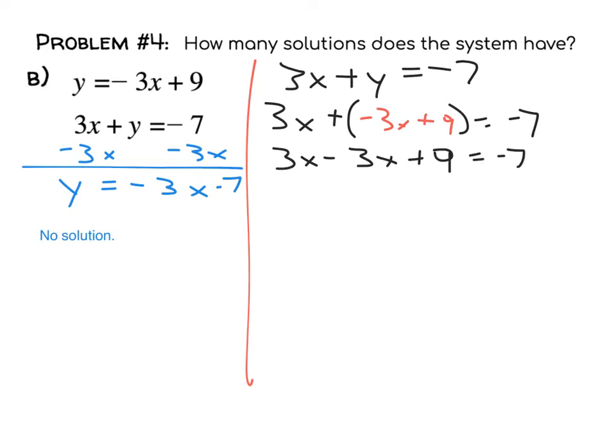What do we get? 3x minus 3x is 0, so 0 plus 9 is 9. That's the only thing left on that side. 9 equals negative 7. By the way, that is not true.